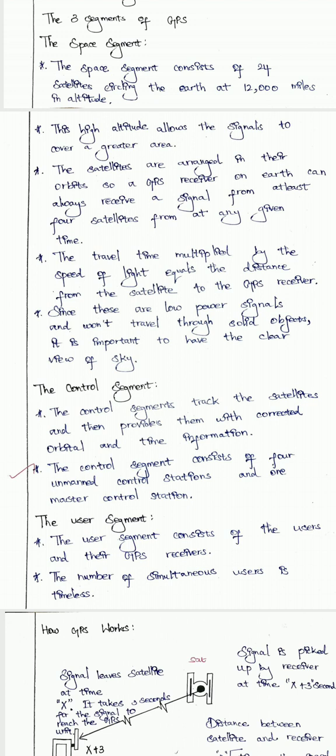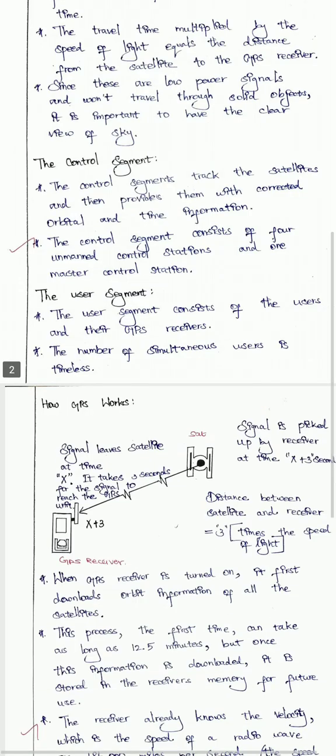Next, we are going to discuss the control segment. The control segment tracks the satellites and provides corrected orbital and time information. Control segments consist of 4 unmanned control stations and 1 master control station.